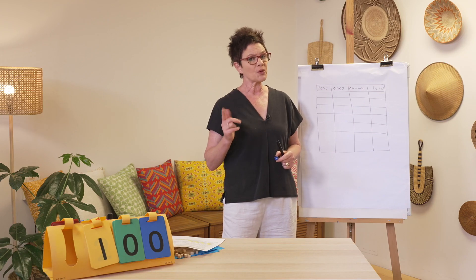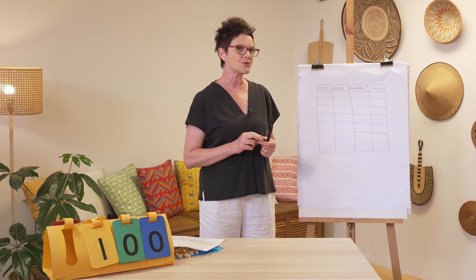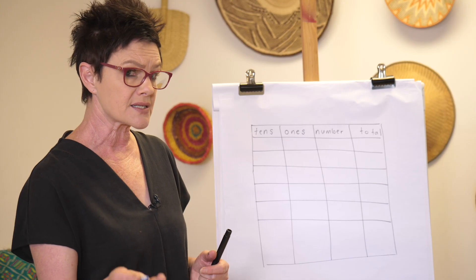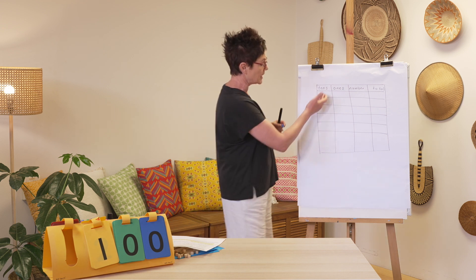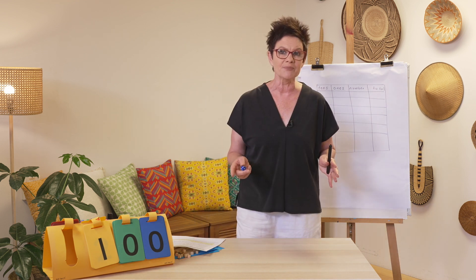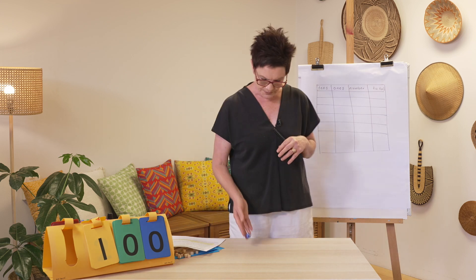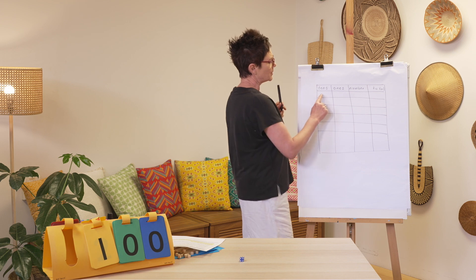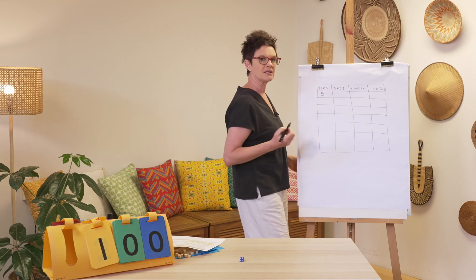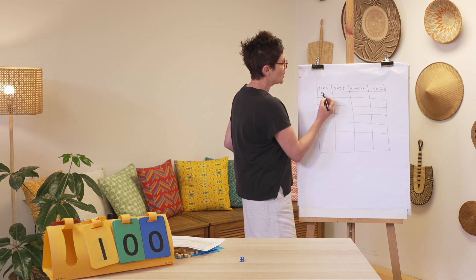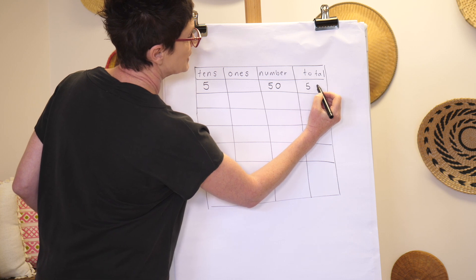Welcome back. This game is called '101 and You're Out.' We're trying to get as close to 100 as we can with only six rolls of the dice. The dice goes from one to six and you only have six spots to write. I'll play a game and show you. First roll — oh, five! Am I going to put five as a ten or a one? I think I'll use it as a tens digit, so I'm halfway to 100. My number is 50 and my total is 50.